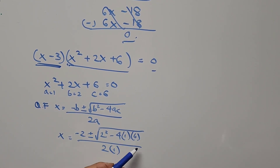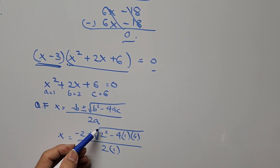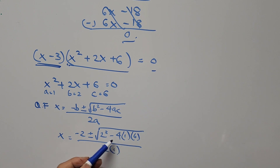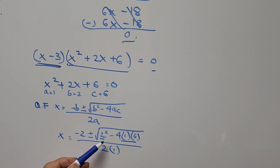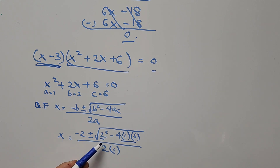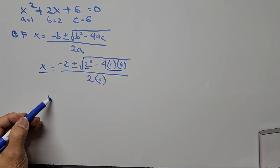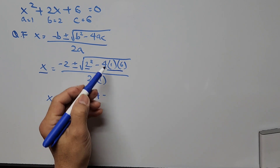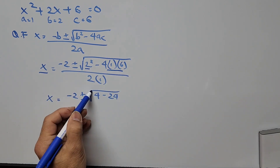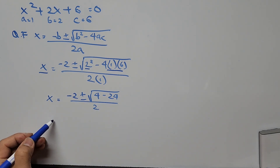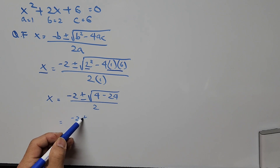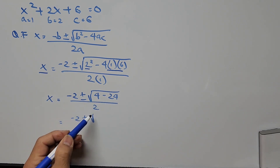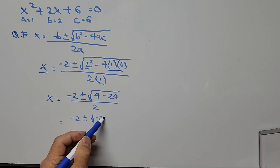Notice that the value inside the radical — the discriminant — is negative, since 4 minus 24 is negative 20. A negative discriminant means we'll have imaginary numbers as the complex values of x. Simplifying: x equals negative 2 plus or minus the square root of negative 20, divided by 2.